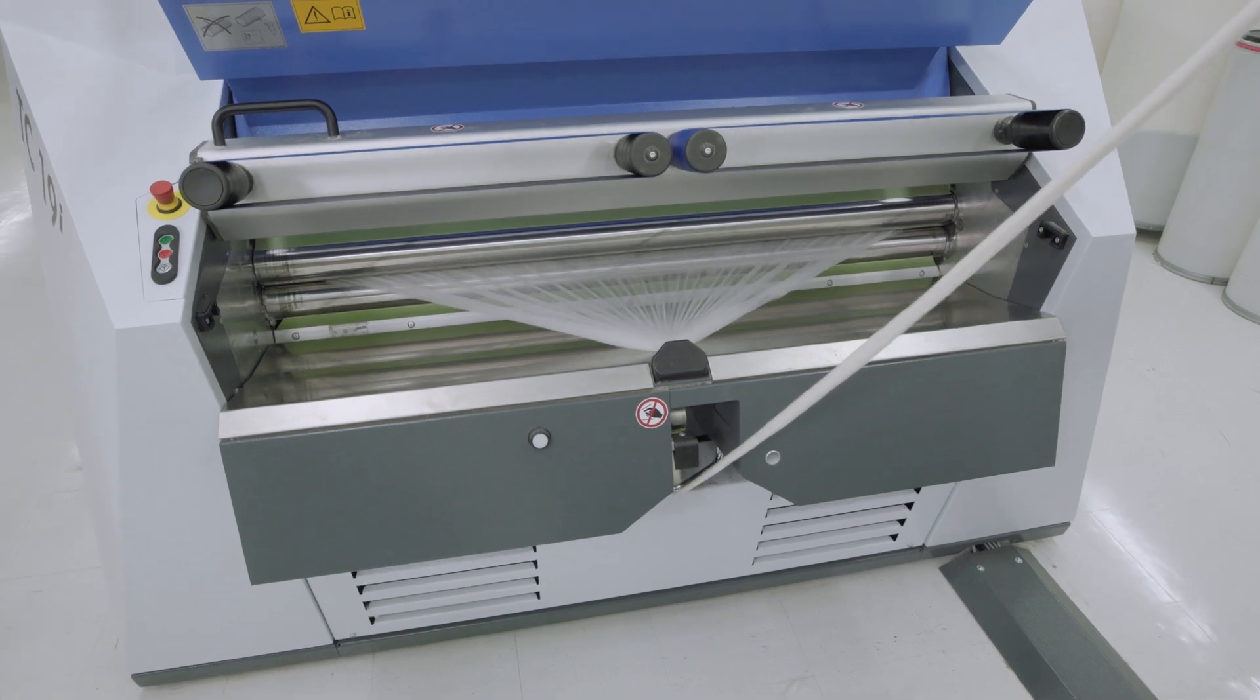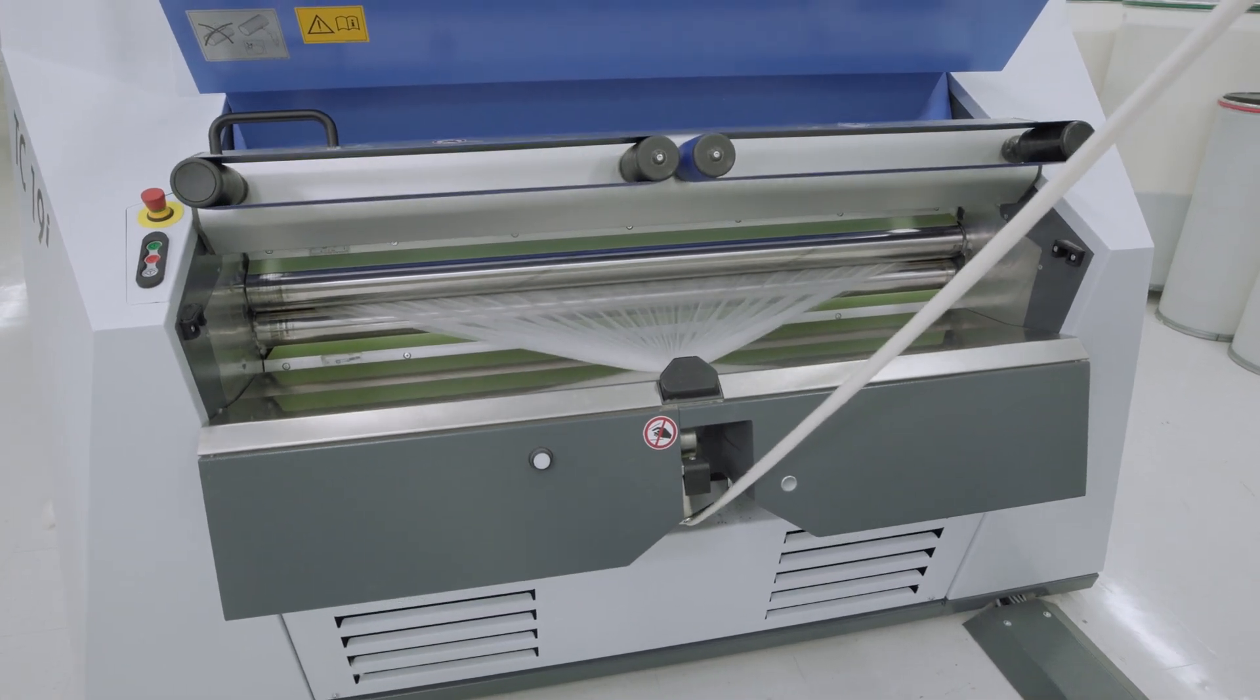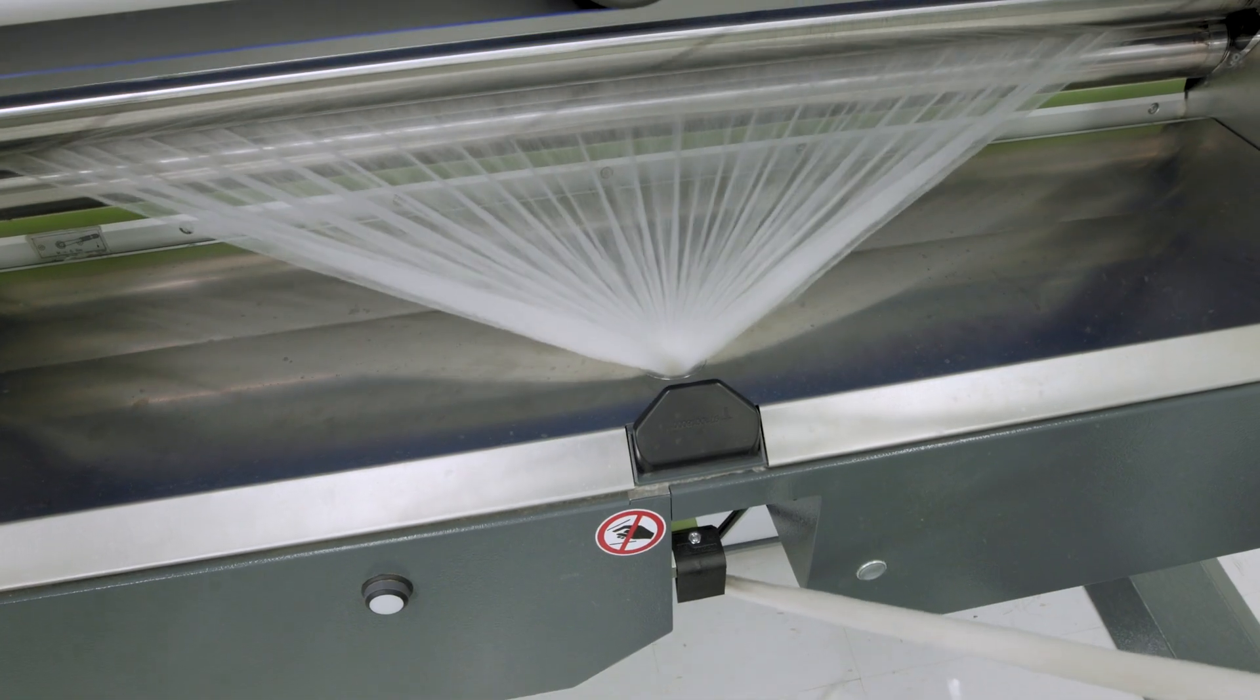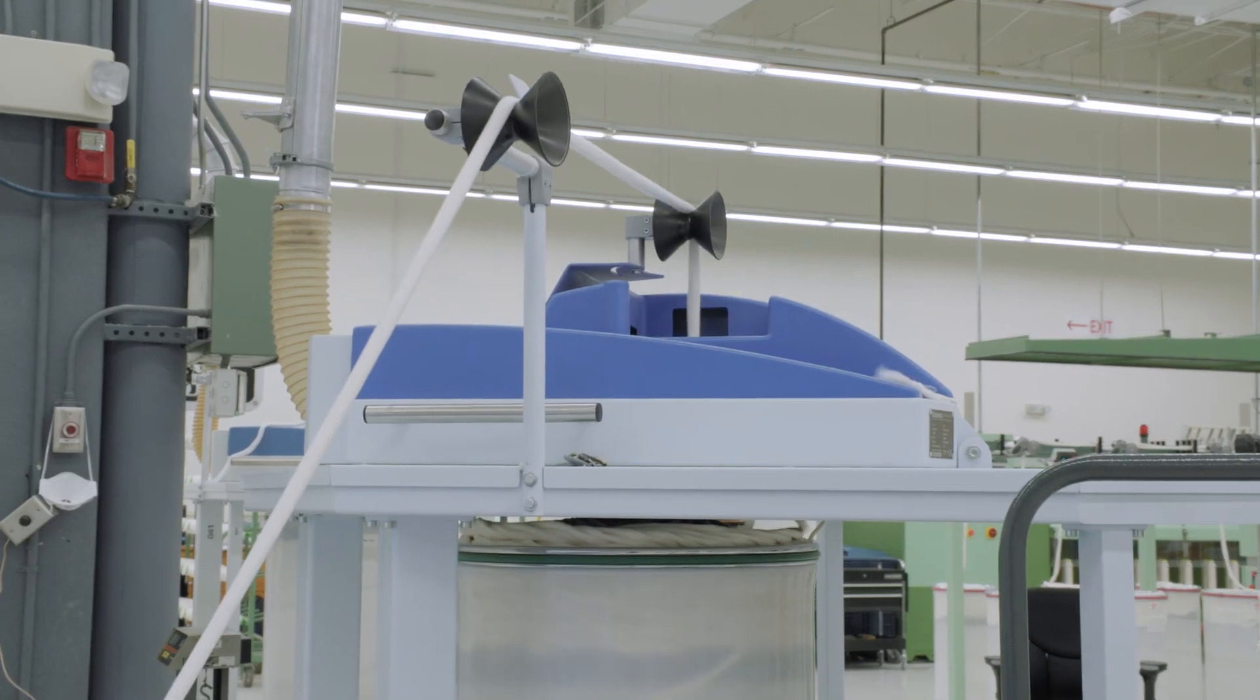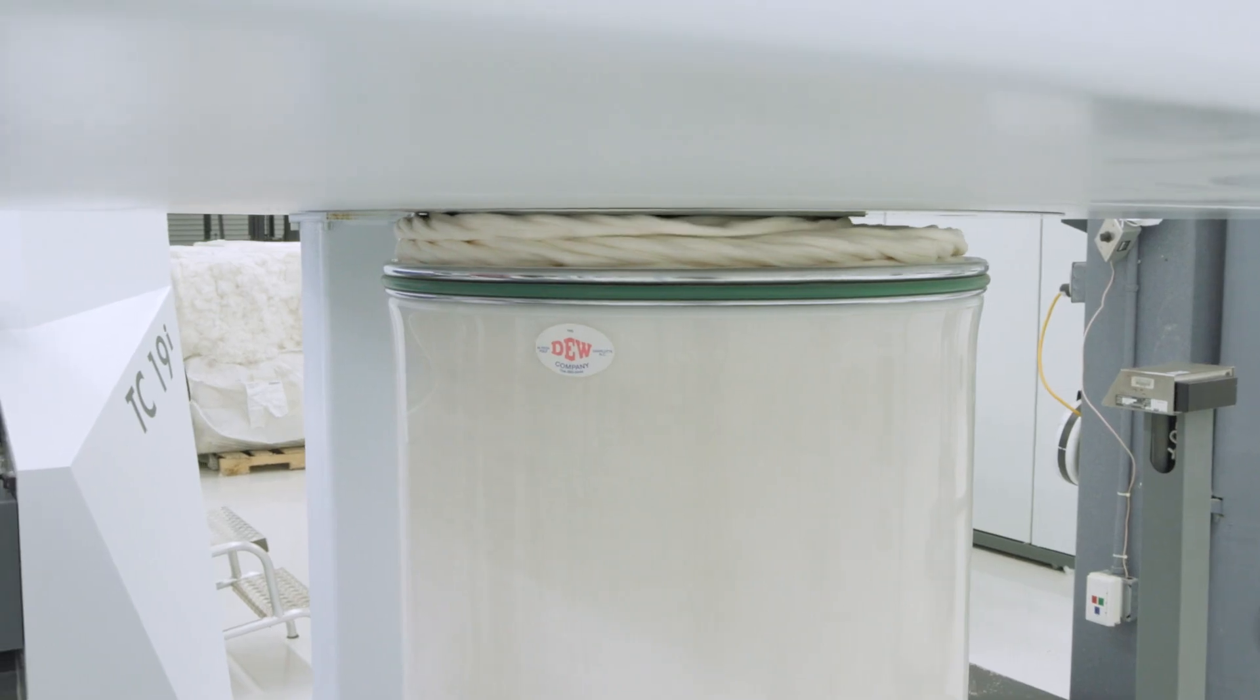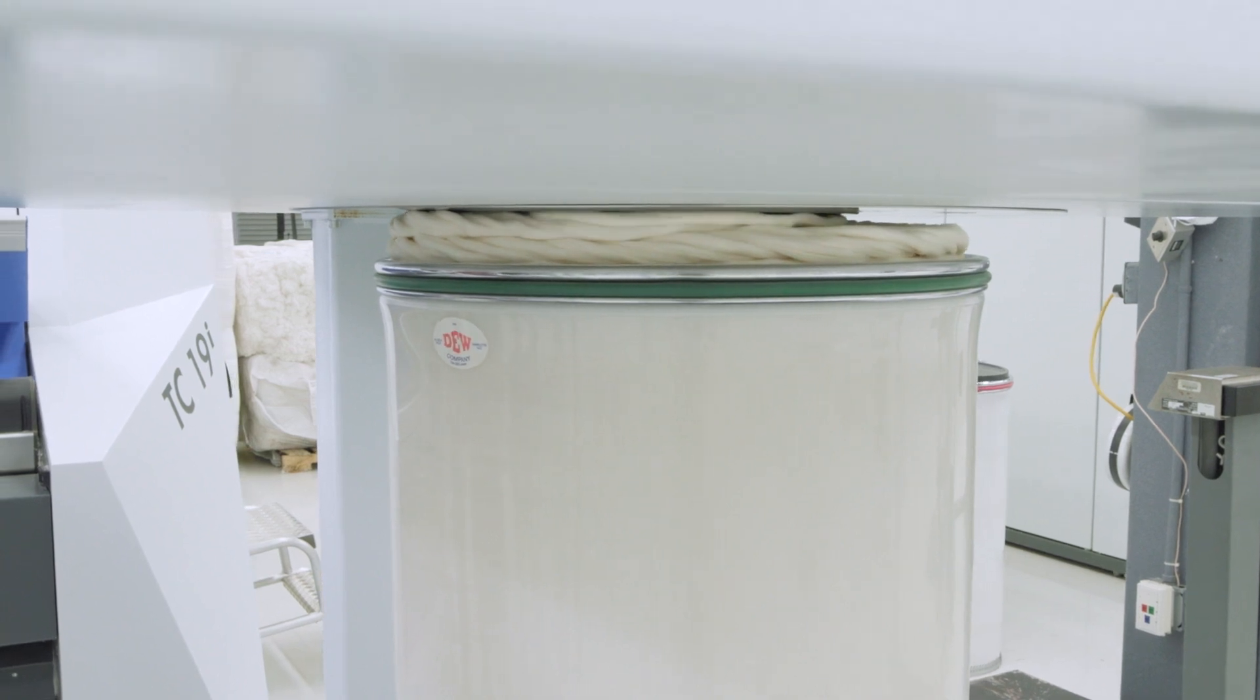After the semi-aligned fiber is removed, doffed, from the last cylinder, it is condensed into a sliver using a trumpet or funnel. The sliver is then coiled into a can for temporary storage and transport to the next process.